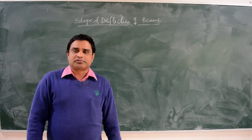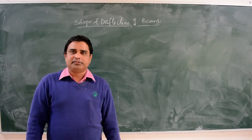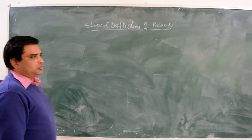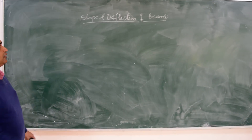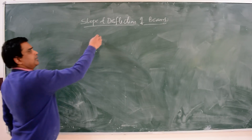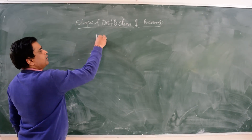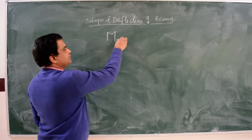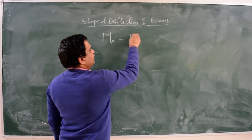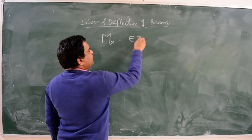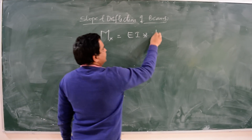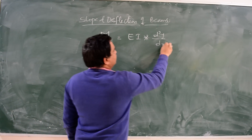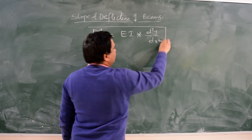Today we are going to discuss slope and deflection by the double integration method. The equation of the elastic curve gives the bending moment at x equal to the flexural rigidity of the beam multiplied by d²y/dx². This is the equation of the elastic curve.